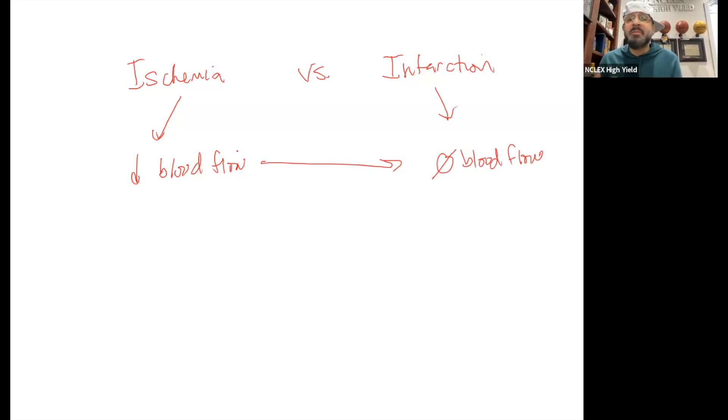Ischemia is going to be decreased blood flow, which means I'm going to have decreased oxygen to that portion of the heart. If I've decreased blood flow or decreased oxygen, it's going to lead to chest pain, and chest pain is known as angina.